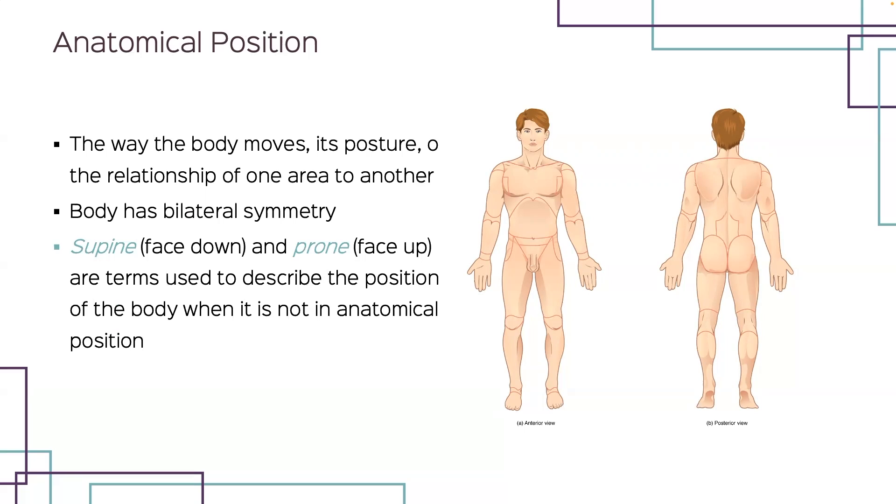The anatomic position is a reference position that gives meaning to the directional terms used to describe body parts and their regions. You'll need to know this anatomic position in order to apply those directional terms correctly. When you're in the supine position, that means you are lying face upward, and in the prone position the body lies face downward.